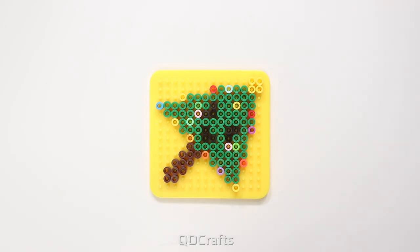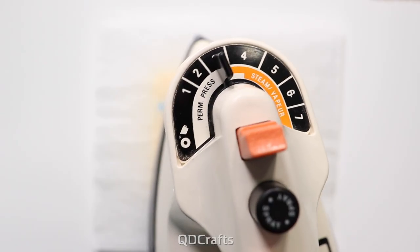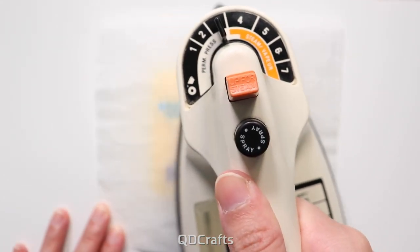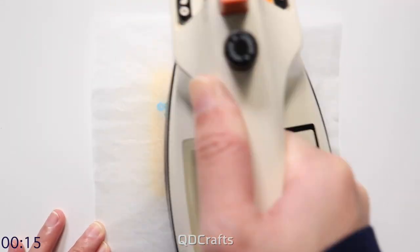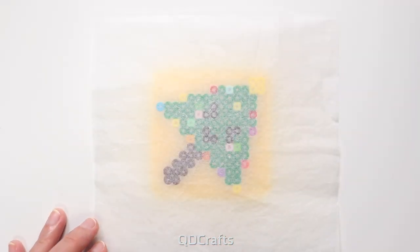It's time to iron and we've got parchment paper or ironing paper on top. Iron at a medium heat setting and then just go in circular motions over the beads until you can see that they're molded through the paper. That's how you know that they're fused together.